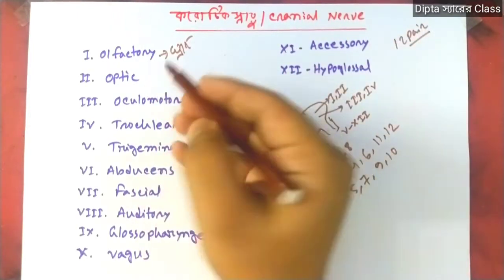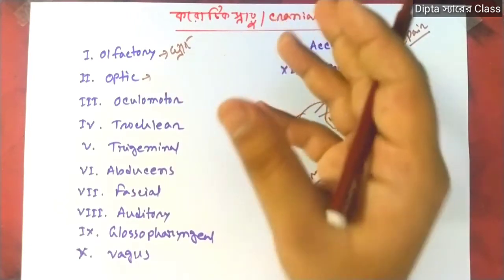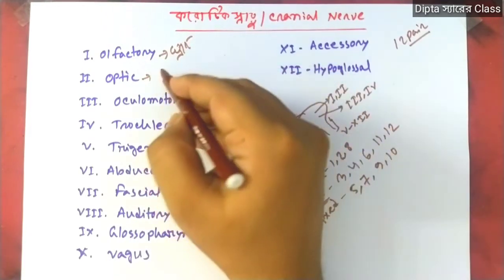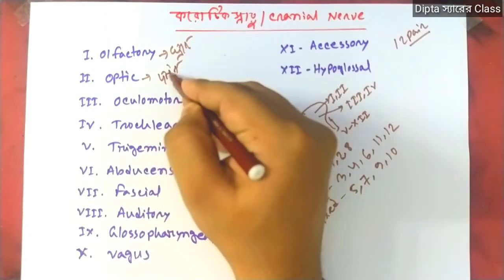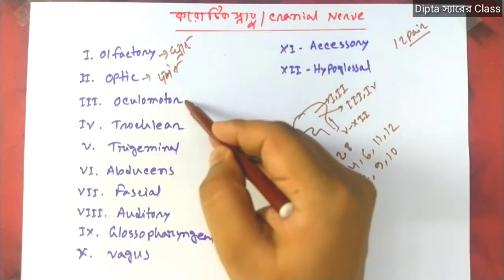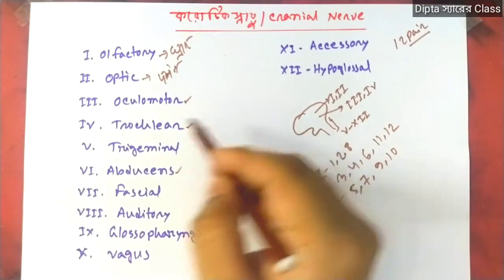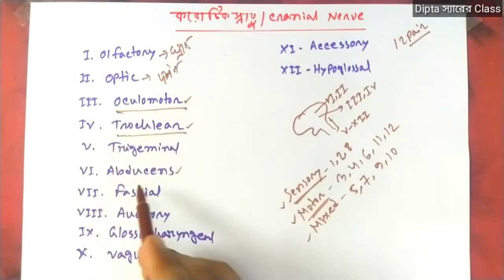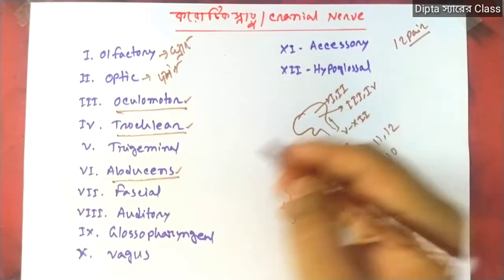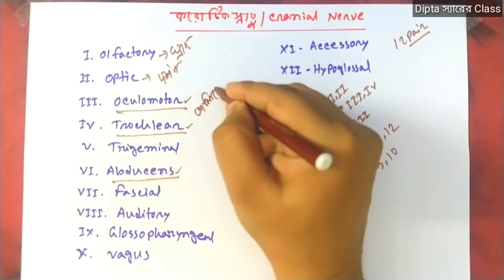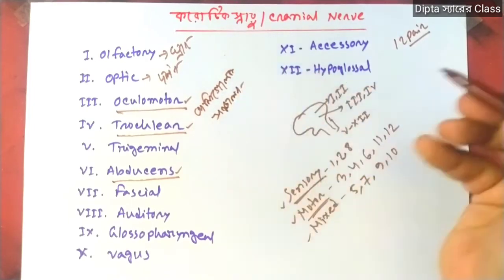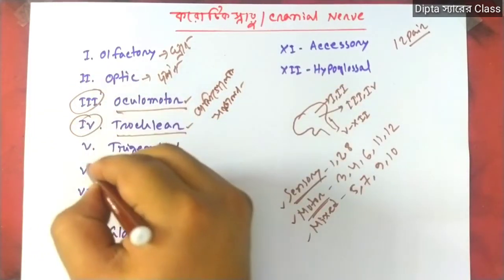This is the Optic nerve — it is sensory, carrying visual information. There will be a function related to sight. Cranial nerves 3, 4, and 6 share a related function — the main function of these is eyeball movement.